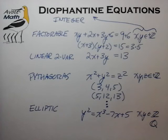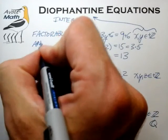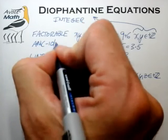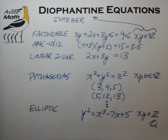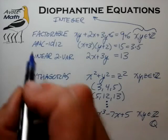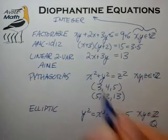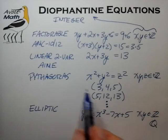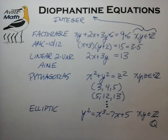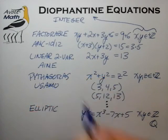The places where you'll likely see these types of equations: the factorable equation is the most common form in the AMC 10 and 12 exams. The linear two-variable equation might appear in the AMC 12, but it's more likely to show up at the AIME level. The Pythagorean relationship and the mathematics of generating Pythagorean triples is more likely to occur in the USAMO level of testing.